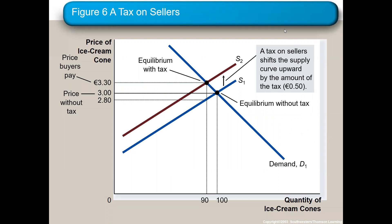The tax burden here: consumers pay 30 cents and suppliers pay 20 cents. The tax burden is always going to fall more heavily on either the buyers, if the demand curve is more inelastic, or the suppliers, if their supply curve is more inelastic. The burden is always going to be greater on the curve that's more inelastic, because if price goes up, quantity demanded or quantity supplied changes very little.